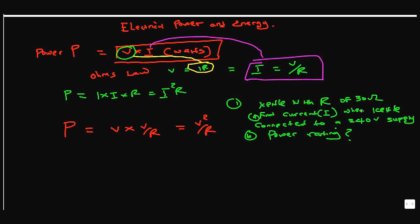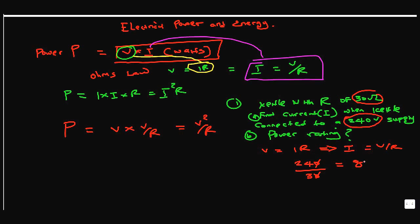To find the current, we know the voltage is 240V and the resistance of the kettle is 30 ohms. From V = IR, we rearrange to I = V/R, which gives us 240 divided by 30 — that's 8 amps.